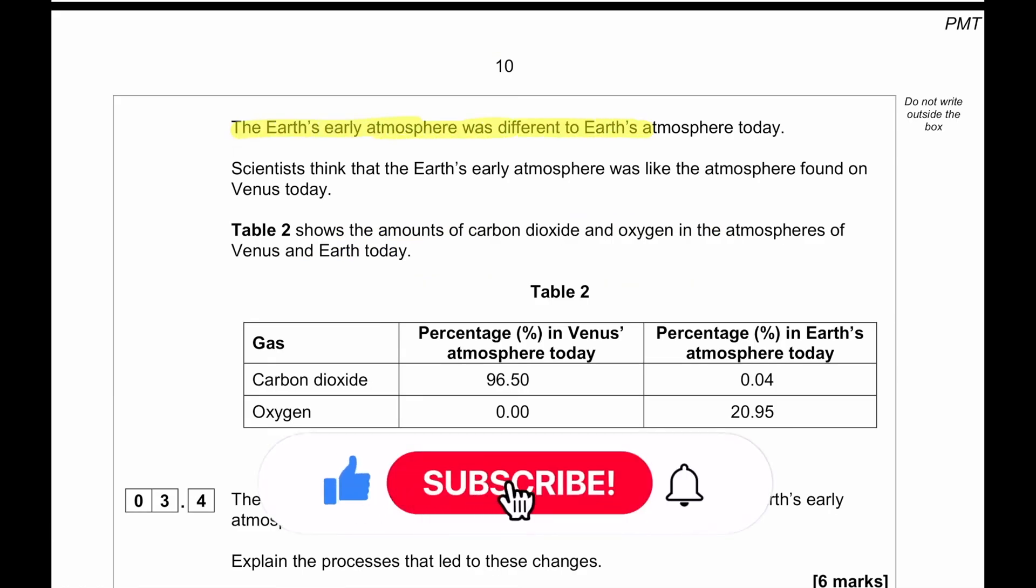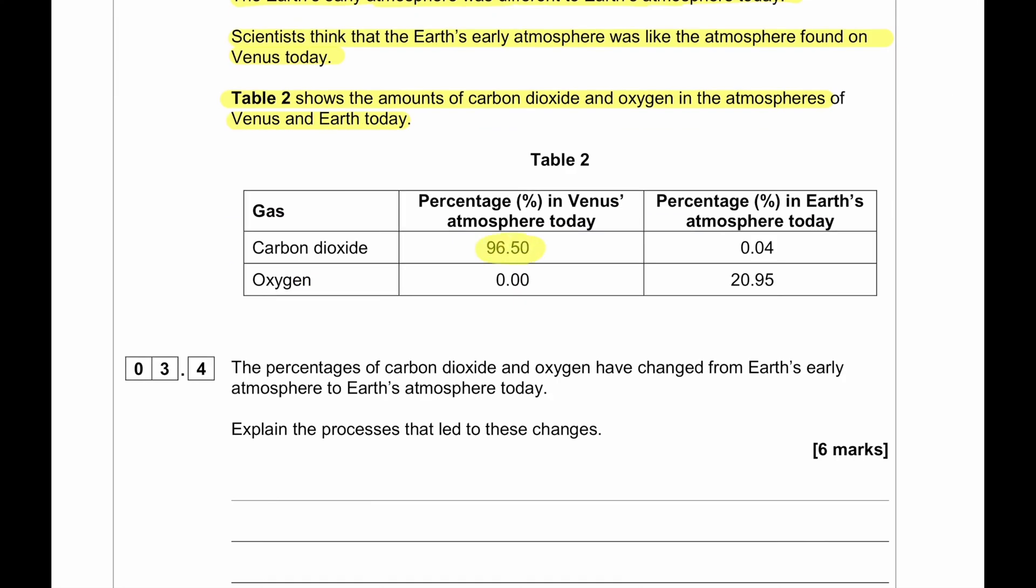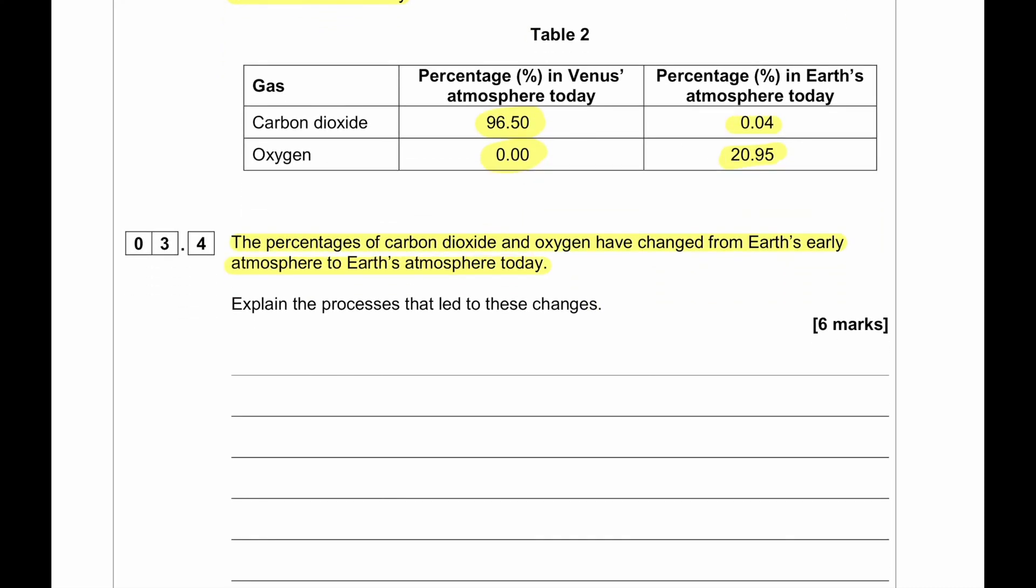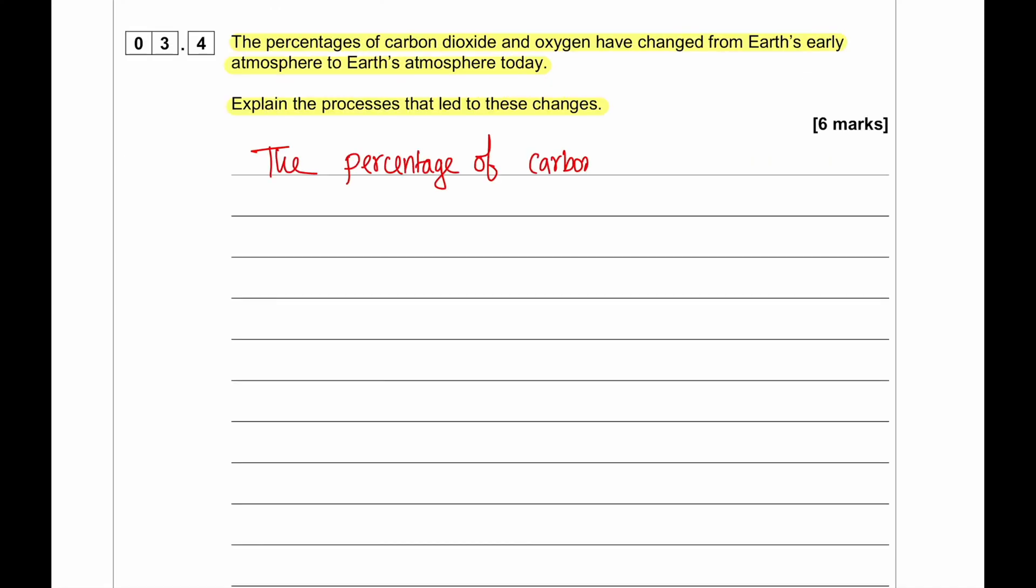The Earth's early atmosphere was different to Earth's atmosphere today. Scientists think the Earth's early atmosphere was like the atmosphere found on Venus today. Table 2 shows the amounts of carbon dioxide and oxygen in the atmosphere of Venus and Earth today. We can see the carbon dioxide in Venus, 96.5 percentage of carbon dioxide is very low, 0.04. And percentage of oxygen in Venus is 0, whereas percentage of oxygen on Earth is 20.95. The percentages of carbon dioxide and oxygen have changed from Earth's early atmosphere to the Earth's atmosphere today. Explain the processes that lead to the changes. So this is a very good question. First of all, what we need to say is what changes? The carbon dioxide has decreased in concentration on Earth and what has increased? The oxygen has increased in concentration on Earth.